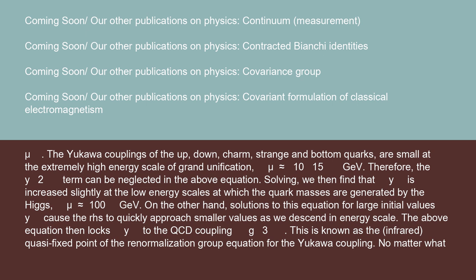On the other hand, solutions to this equation for large initial values y cause the right-hand side to quickly approach smaller values as we descend in energy scale. The above equation then locks y to the QCD coupling g_3. This is known as the infrared quasi-fixed point of the renormalization group equation for the Yukawa coupling.